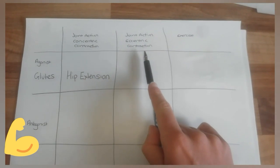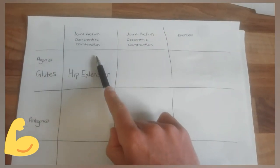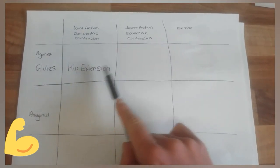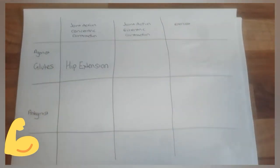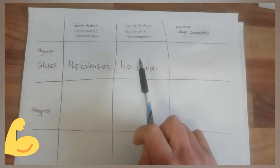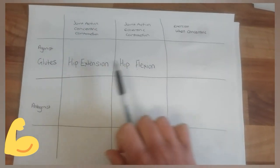And then for the eccentric contraction, it's going to be the opposite movement. So here the muscle is getting shorter, here the muscle is getting longer. So what would be the opposite joint action to hip extension? We've got hip flexion for the eccentric contraction. Notice that these are exact opposite joint actions.